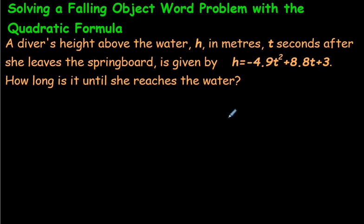Hi there, in this video we're going to look at one single question. It's going to be about a person who's diving on a diving board, flying through the air, and we call these kind of questions falling object word problem type questions.